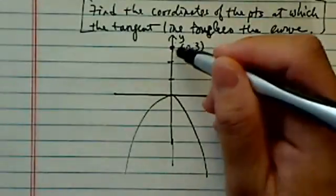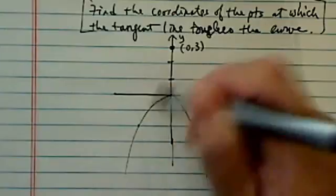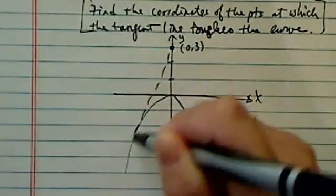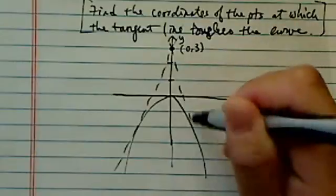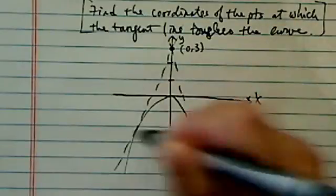So they're saying, I'm going to draw a tangent line, but it will touch the curve at one point. Of course, there's two tangent lines, one on each side, and they want to know where those points are.